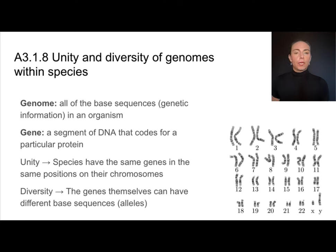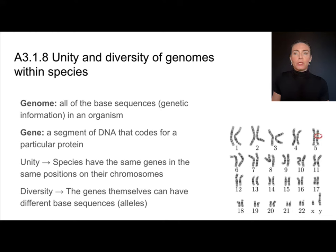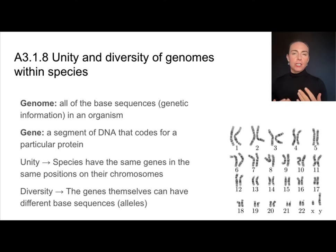So how are species showing unity? Species are going to have the same genes in the same positions on their chromosomes. You and I are the same species, and even though we are different and unique individuals, we will both have the same gene right here. The way that we demonstrate diversity is that the genes themselves might have different base sequences. Your gene might have a slightly different base sequence than my gene, even though it codes for the same trait and it's located on the same chromosome. If you've studied genetics before, we call those alleles.